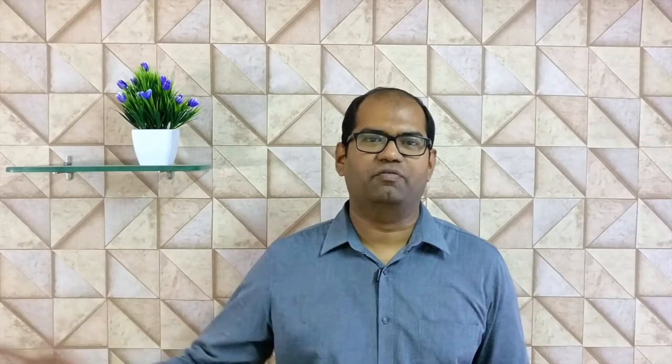We will talk about the details of the problem using a company example. There is a raw material stage. Let us say we have 4 operations: Operation 1, Operation 2, Operation 3 and 4. Finally, finished goods.